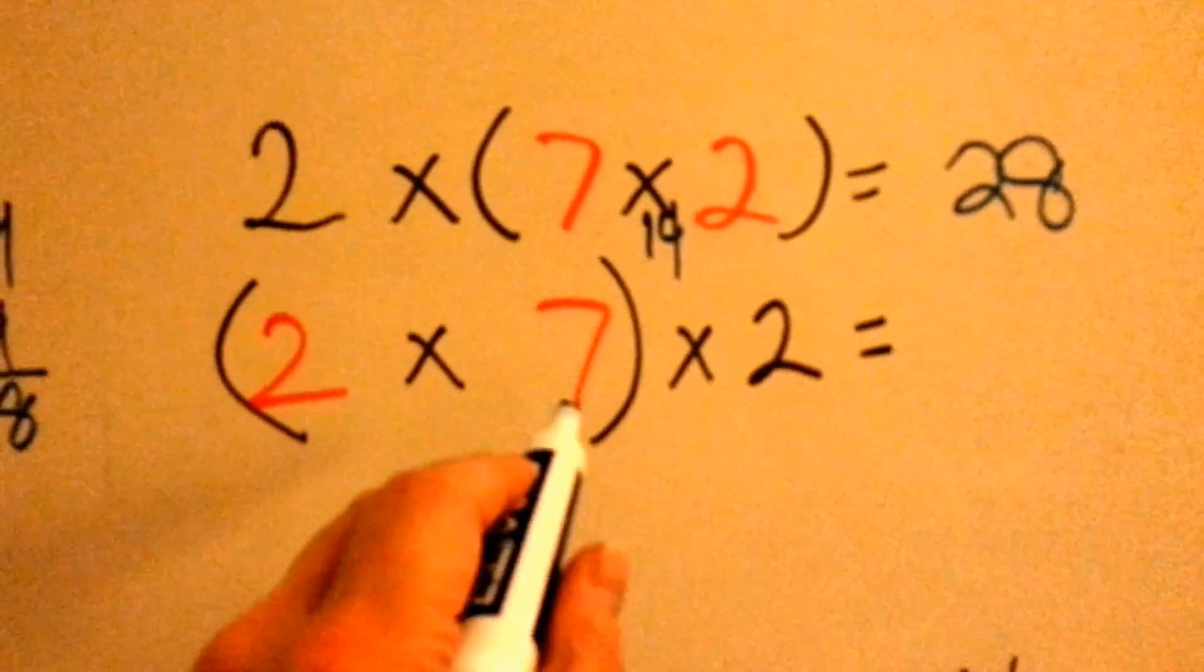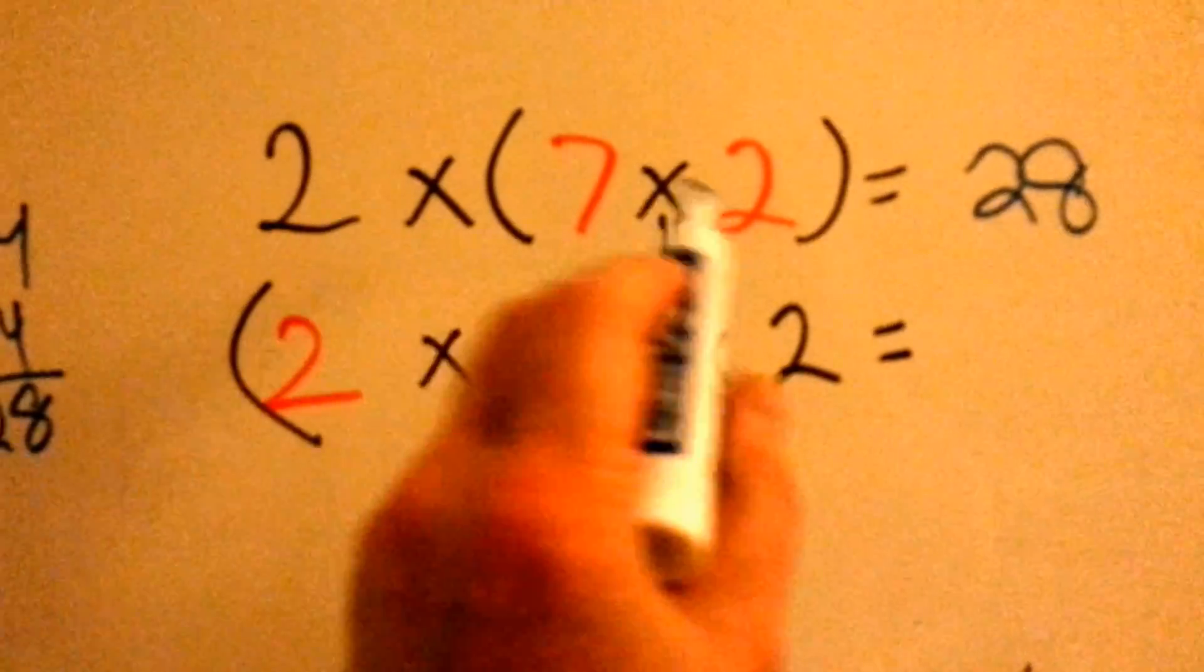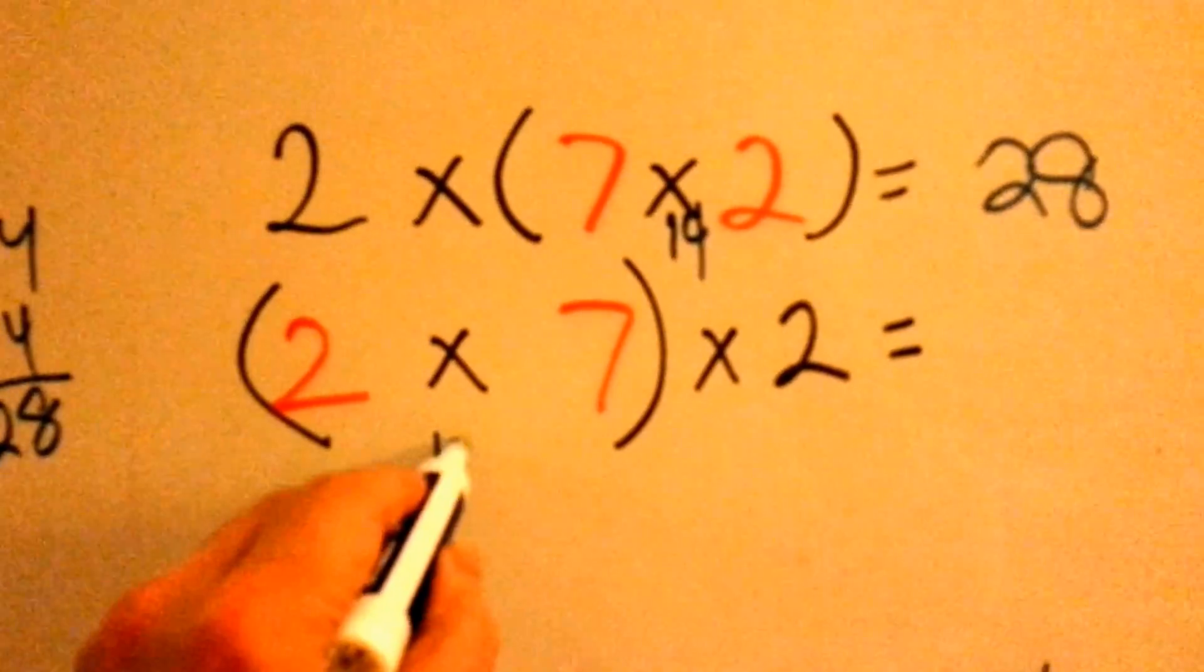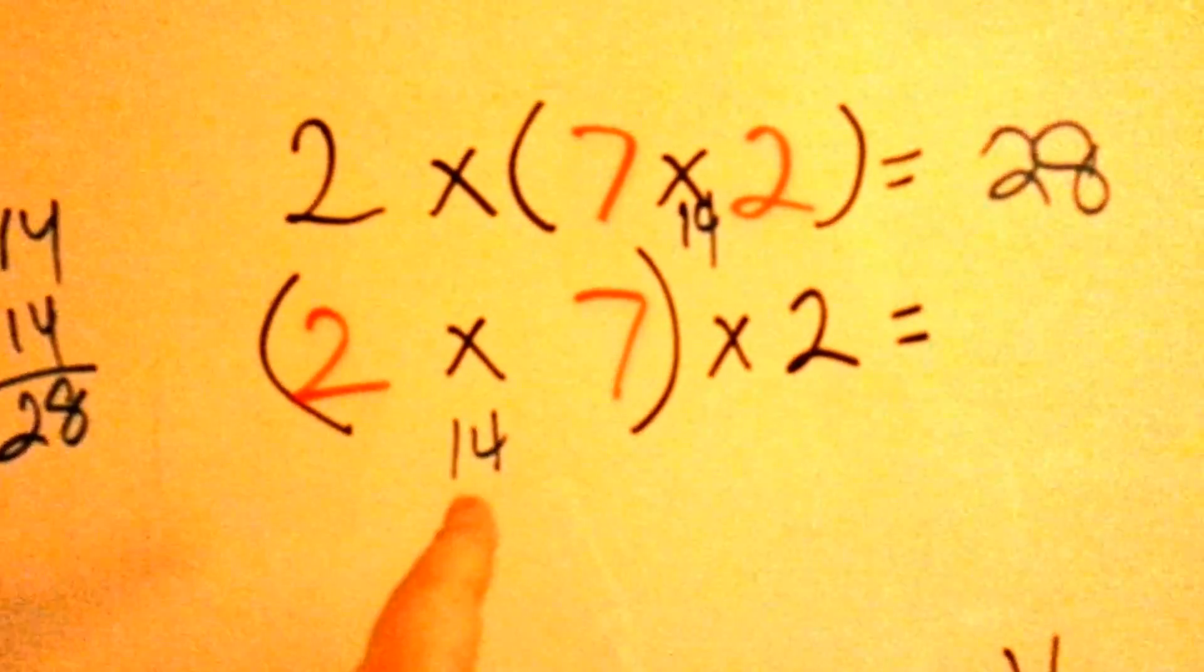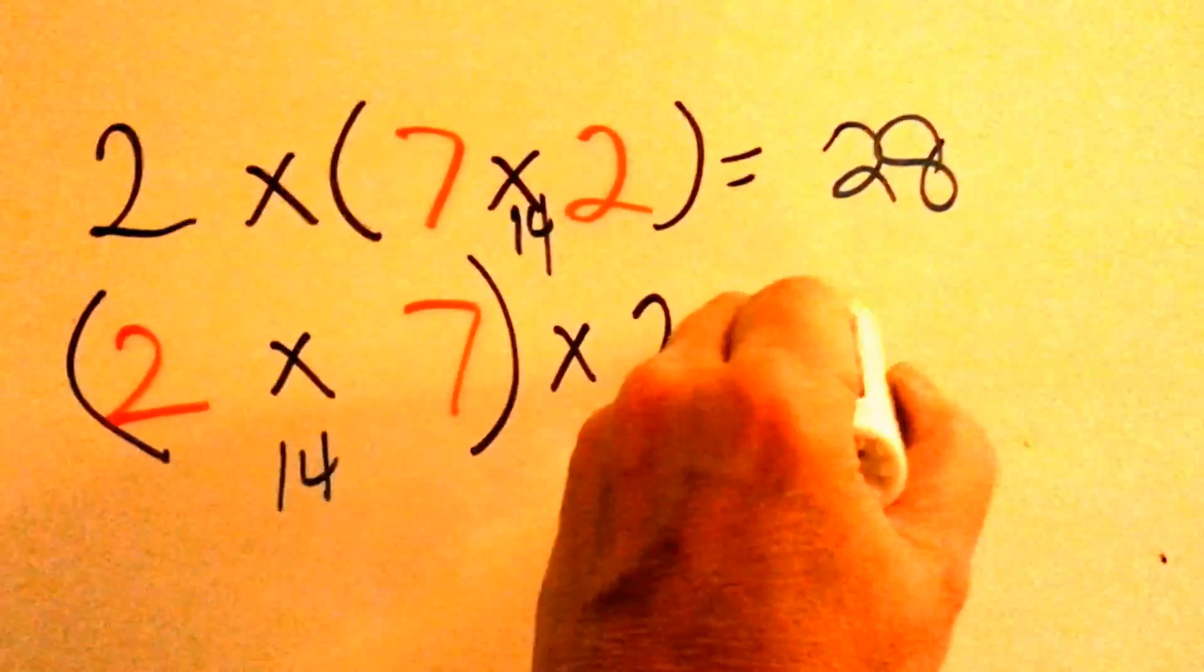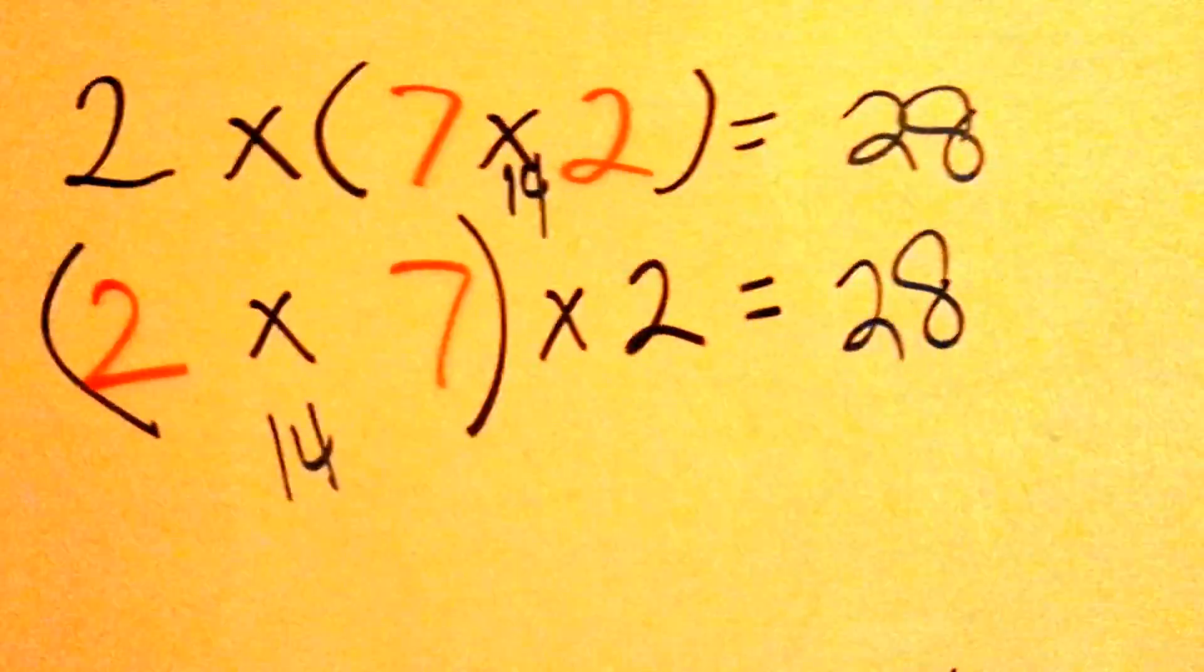What's two times seven? Same thing as seven times two. It's fourteen. And look, it's the same thing, fourteen times two, just like we had over here. Fourteen times two is twenty-eight. It's the same thing.